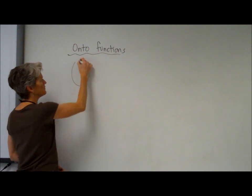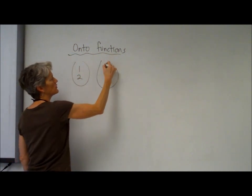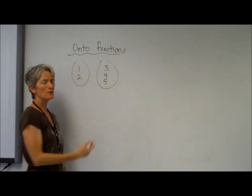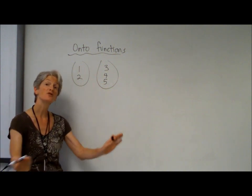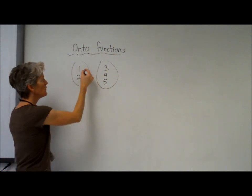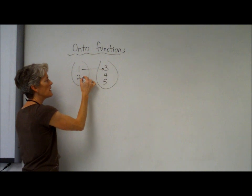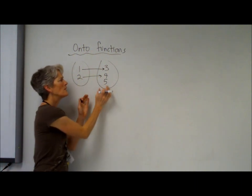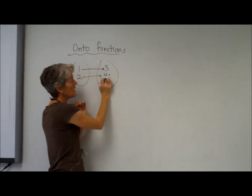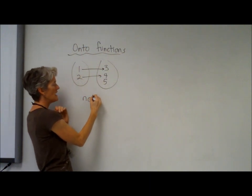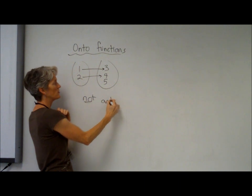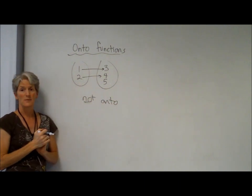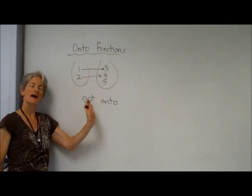An onto function, if you look at those examples, is a function that basically uses every single potential y. So if I map one to three and I map two to four, that's a function, but poor little five who's left out in the cold doesn't get to play. So I would say that's not an onto function because it's not using every potential y.